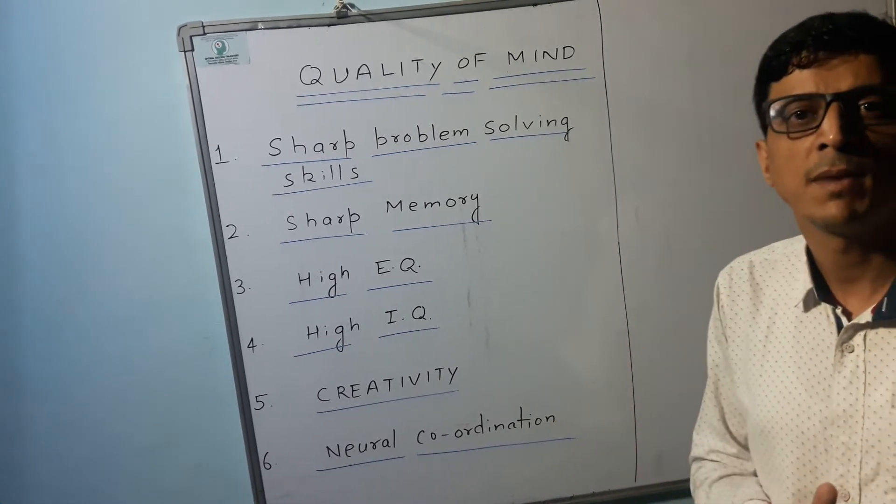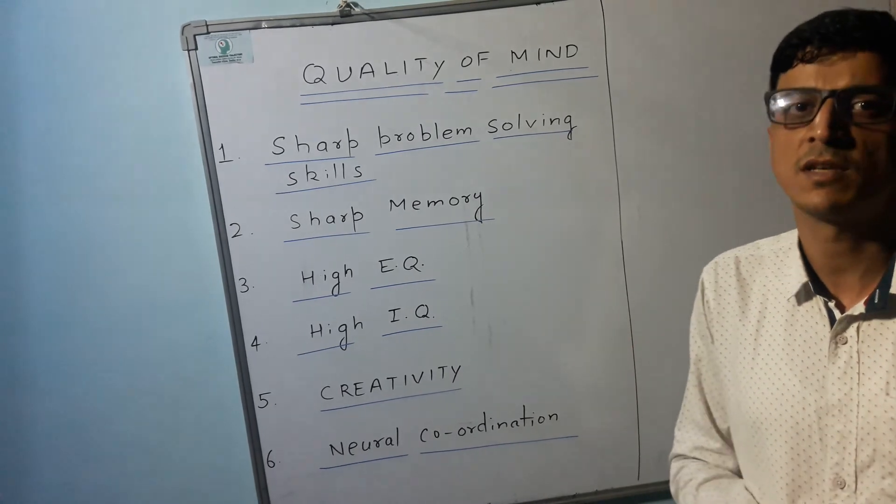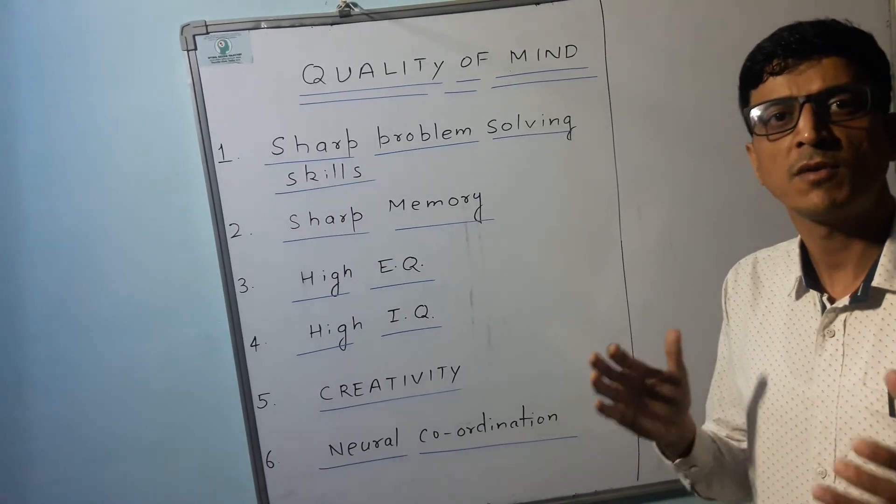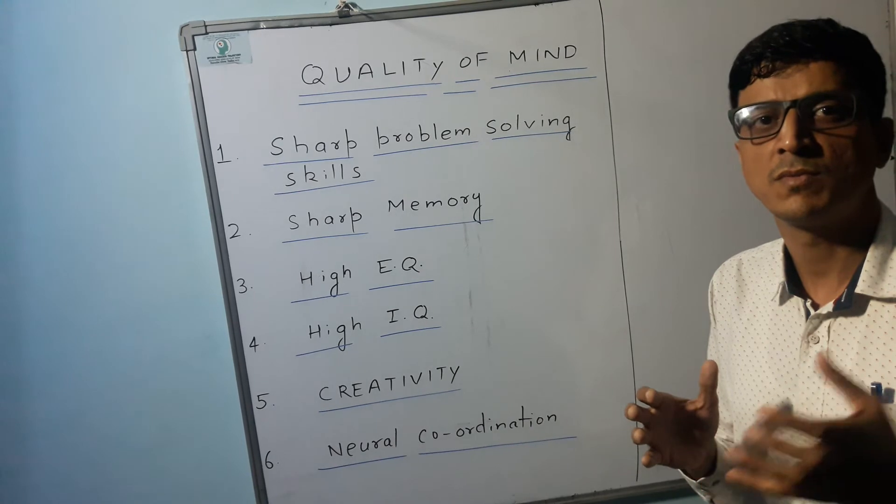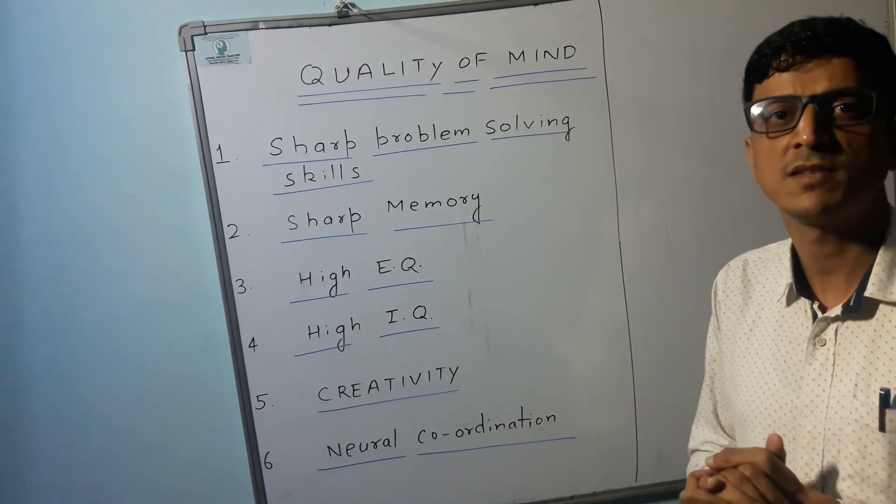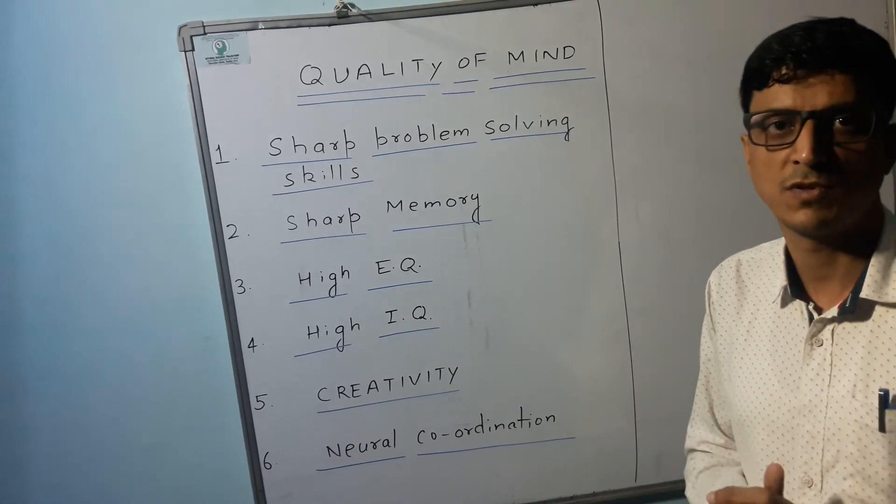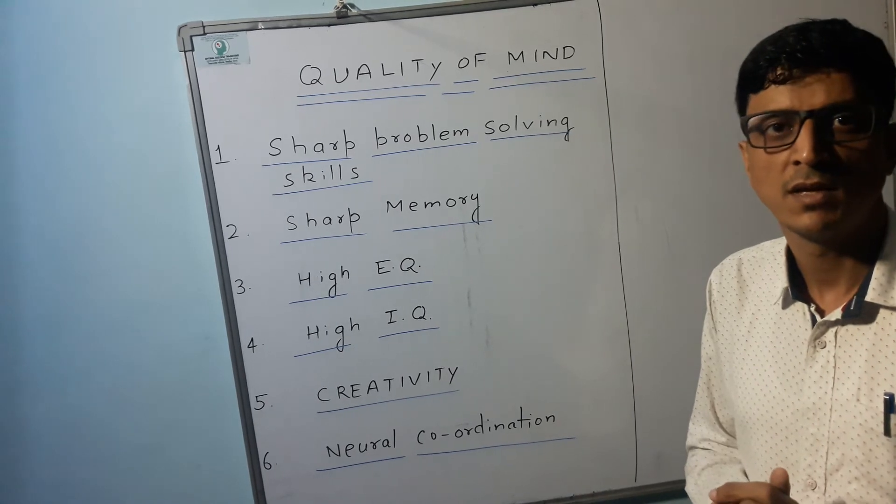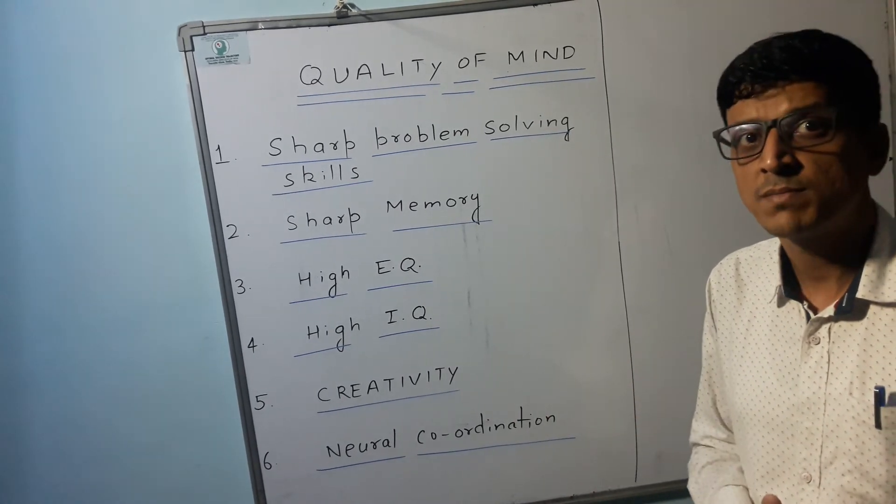The next thing is sharp memory. Because to solve problems you need to use certain information. And if your mind is not able to give you the desired information as and when needed then it is of no use. You won't be able to solve that problem. So you must need to have sharp memory for that.